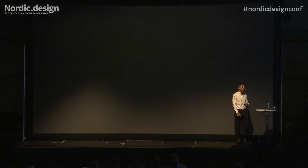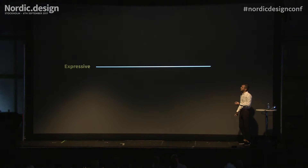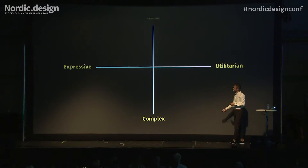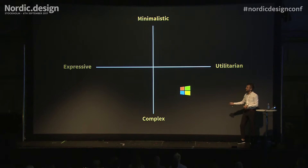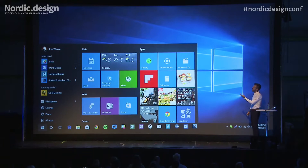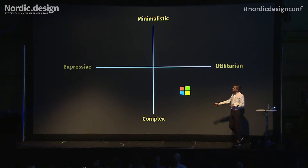Instead, how I like to think about it is: if we draw a spectrum from expressive — how much we try to express a feeling with the design — to utilitarian on the other end, and then add another axis from complex to minimalistic, we can start to map things out. Windows, for example, surfaces more complexity, which isn't necessarily bad — it's a design decision — but it's still extremely utilitarian. They may have a flat design language, but there's a lot going on.